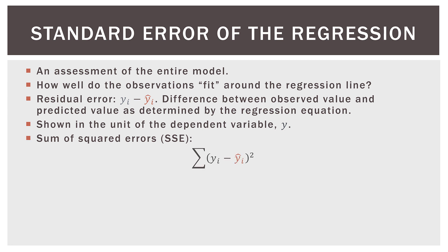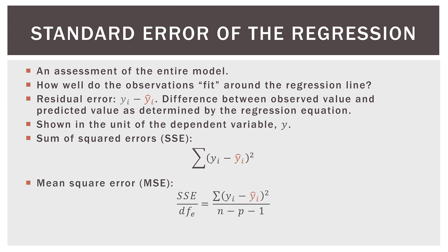We start with the basic idea of the sum of squared errors, or SSE. That is the residual error: y sub i (the observed value) minus the predicted value y-hat sub i, squared, and then summed up. That is the SSE. Then we have the mean square error, or MSE — that is SSE divided by the degrees of freedom based on the error term, DF sub E. The denominator for DF sub E is N minus P minus one, where N is the number of observations and P is the number of features.